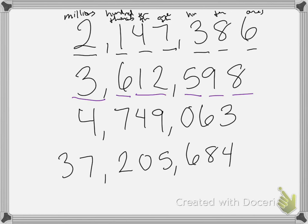All right, so this next one is four million, seven hundred and forty-nine thousand, sixty-three. Because there's no hundred, so it's just sixty-three.